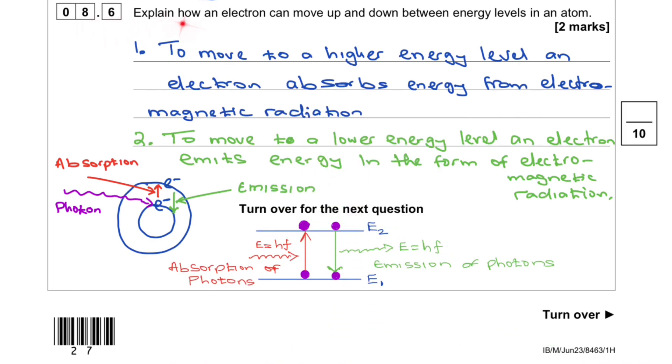8.6. Explain how an electron can move up and down between energy levels in an atom. So here I've drawn the energy levels.